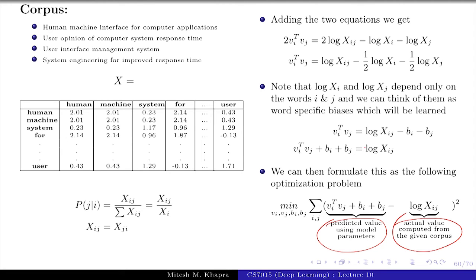This is the predicted value using model's parameters. This is the actual value computed from the corpus. So think of this: you are trying to learn the parameters in such a way that you end up predicting this, and if you have predicted this, you know you have done the right thing. And this you know already because you have computed it from the corpus. So this is the true value and this is the predicted value. So as in any loss function, predicted minus true the whole square. Does that make sense? How many of you are fine with this?